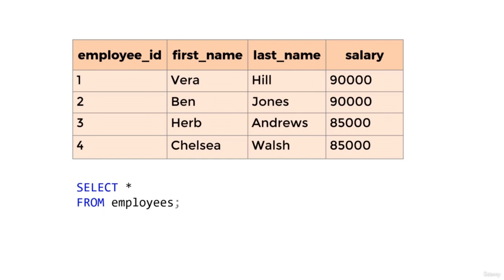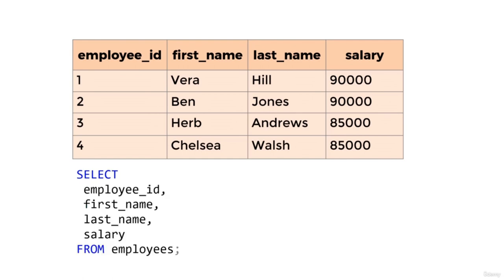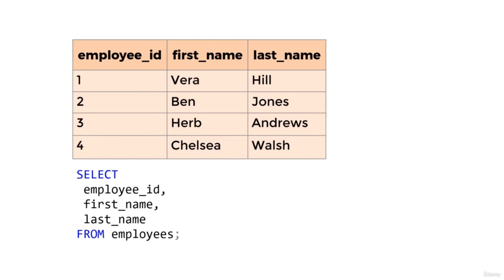Let's write the column names in full. Each column name is on a new line and has been indented — this is not necessary, but indented code is easier to read, particularly for complex SQL statements. Something we can do in SQL is alias object names — we can alias column names and table names if we want. An alias is where we temporarily rename something, but only within the context of the query.